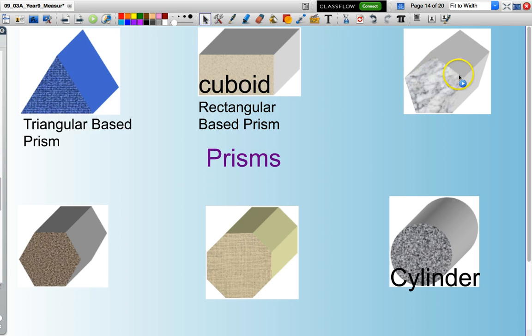This shape has five sides. Therefore it is a pentagonal based prism. This side has one, two, three, four, five, six sides. Therefore it is a hexagonal based prism.